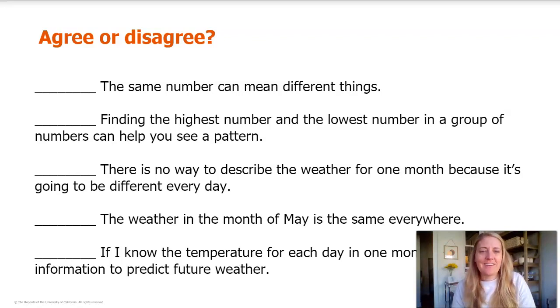Sentence number three: There is no way to describe the weather for one month because it's going to be different every day. The fourth sentence: The weather in the month of May is the same everywhere.